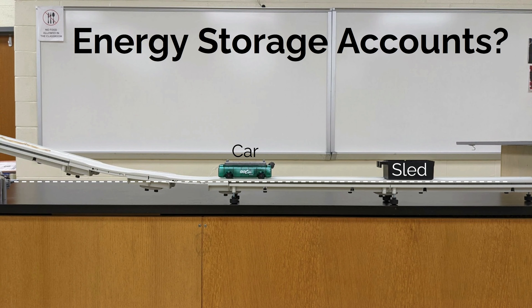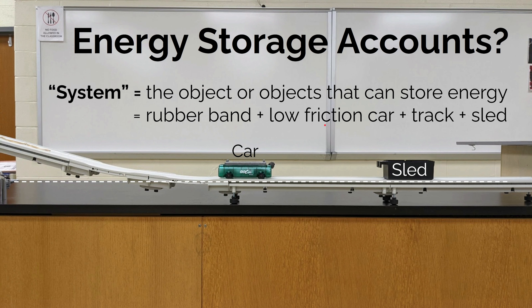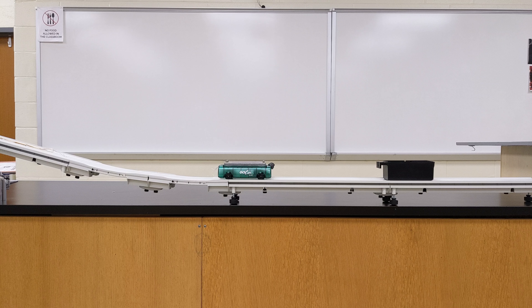Now that we have a common way to talk about energy, let's define some energy storage accounts using a demonstration that will go through a series of events. It's going to involve a car, a rubber band, a sled, and a track. All of these things — the rubber band, the low friction car, the track, and the sled — will be our system. When we talk about a system in physics in terms of energy, it's the object or objects that can store energy. We're going to go through a series of events and ask a few questions.